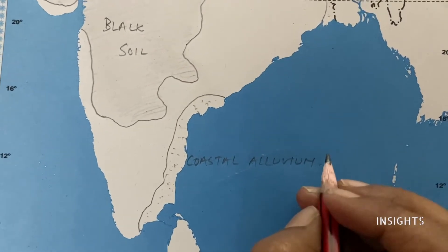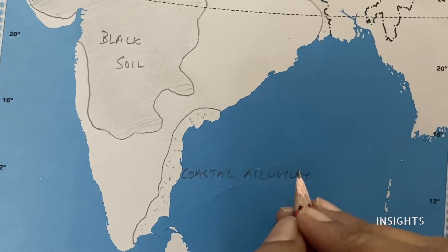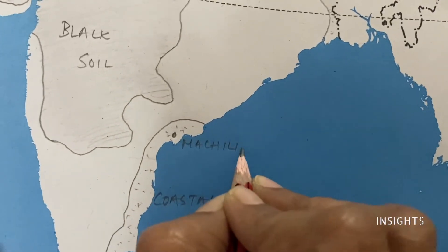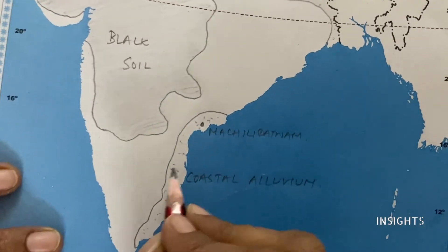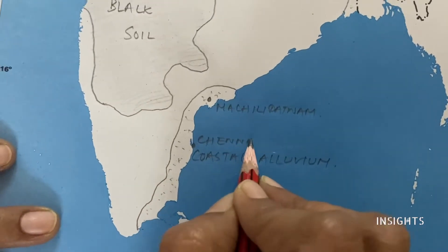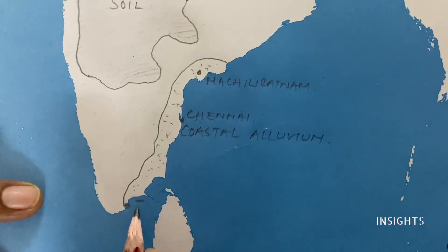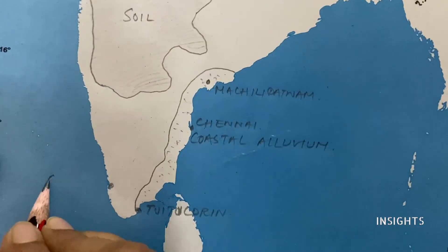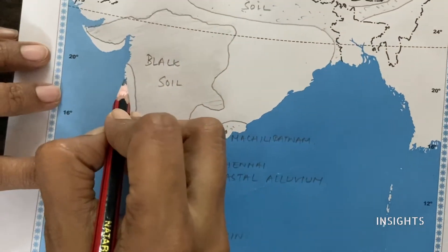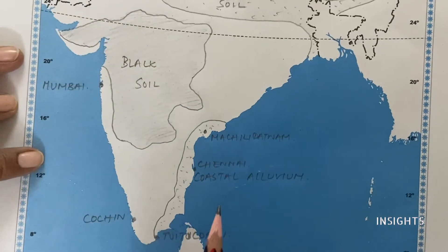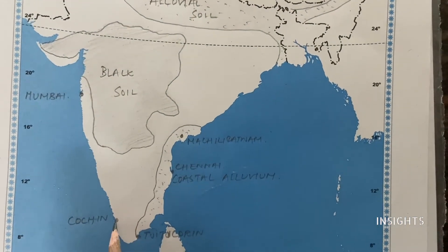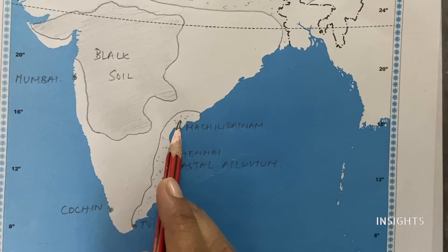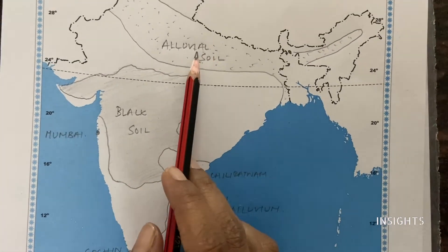Now let's mark the four fishing hubs. First is Machilipatnam — mark it here. Next is Chennai, then Tuticorin, then Cochin, and finally Mumbai. So we have Mumbai, Cochin, Tuticorin, Chennai, and Machilipatnam all marked on the map.